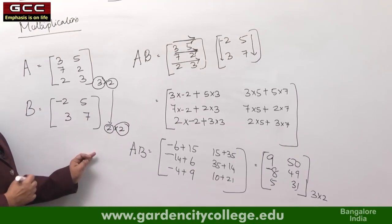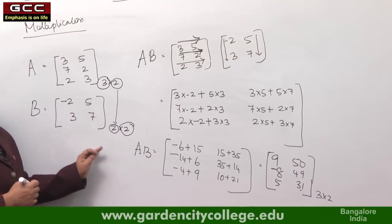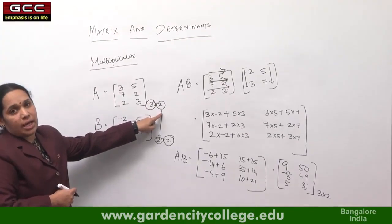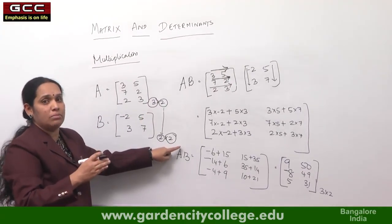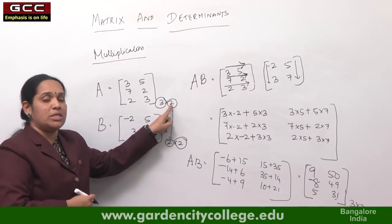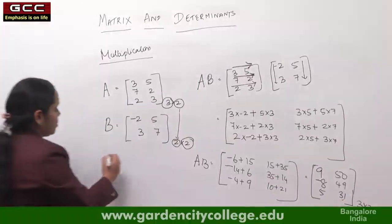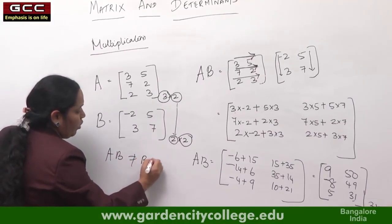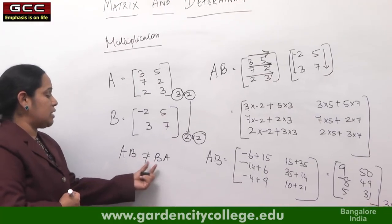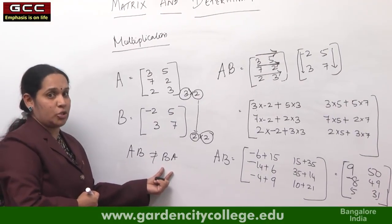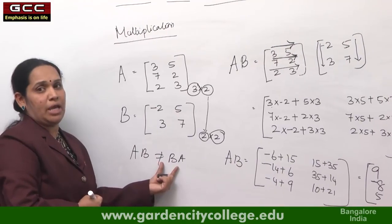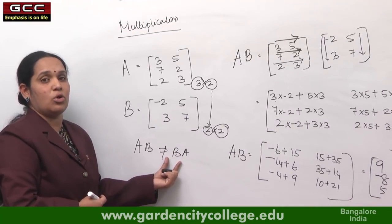The condition for matrix multiplication is that the number of columns of the first matrix must equal the number of rows of the second matrix. Also, please note that matrix multiplication is not commutative — AB is not equal to BA in all cases. Sometimes you may not even be able to compute BA because the order may not match. Even if you can compute BA, it may not equal AB.